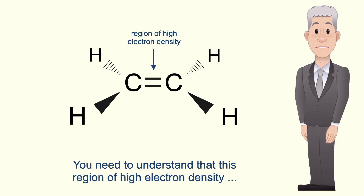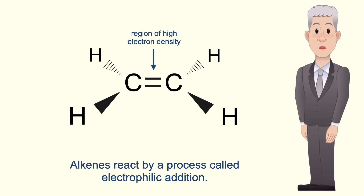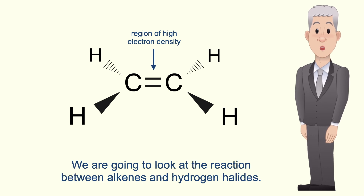This means that the double bond is a region of high electron density. You need to understand that this region of high electron density determines how alkenes react. Alkenes react by a process called electrophilic addition, and we're going to look at the reaction between alkenes and hydrogen halides.